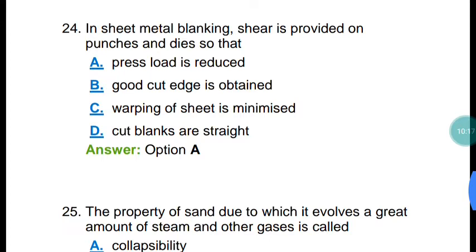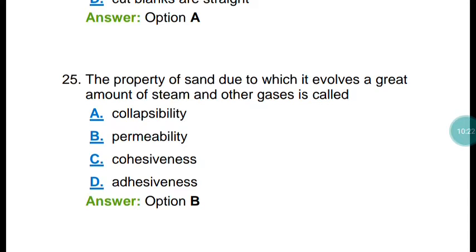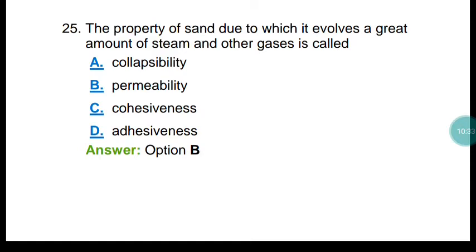Question number twenty-five: the property of sand due to which it evolves a great amount of steam and other gases is known as permeability. The correct answer is option B.